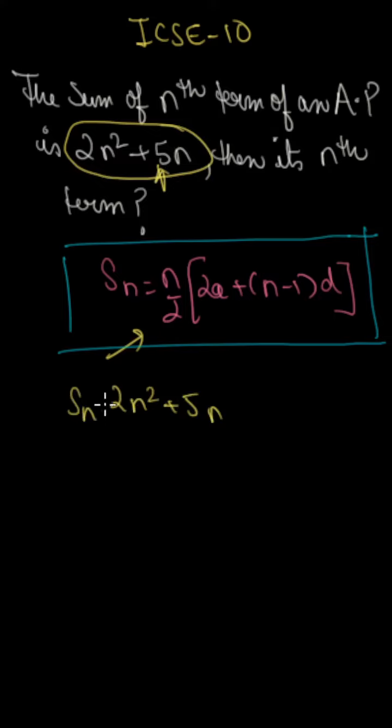So if we put this sum value in question, then sum of 2n squared plus 5. So the sum of first term will be the first term, so if we put 1 in place of n, then it will be 7.